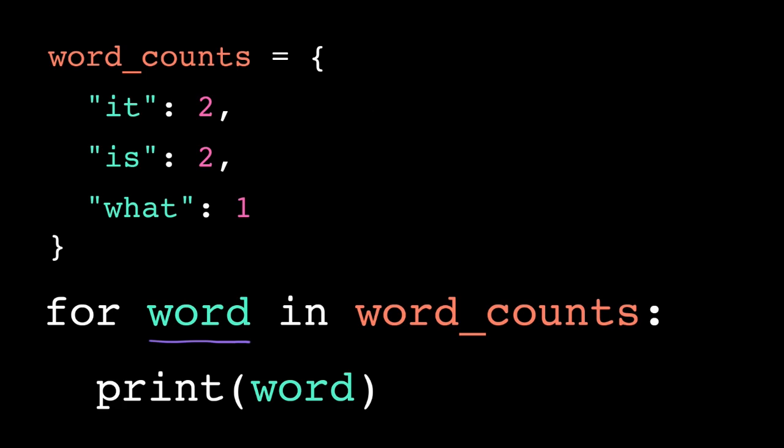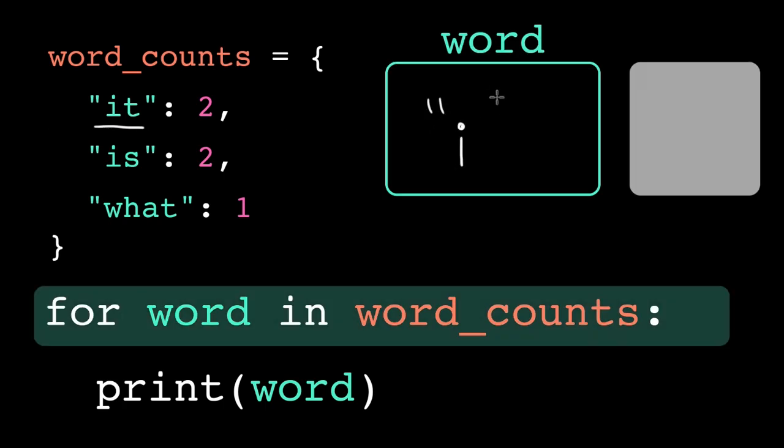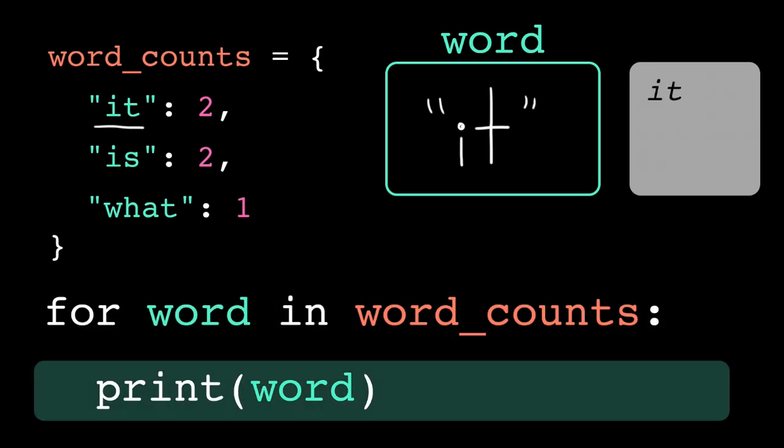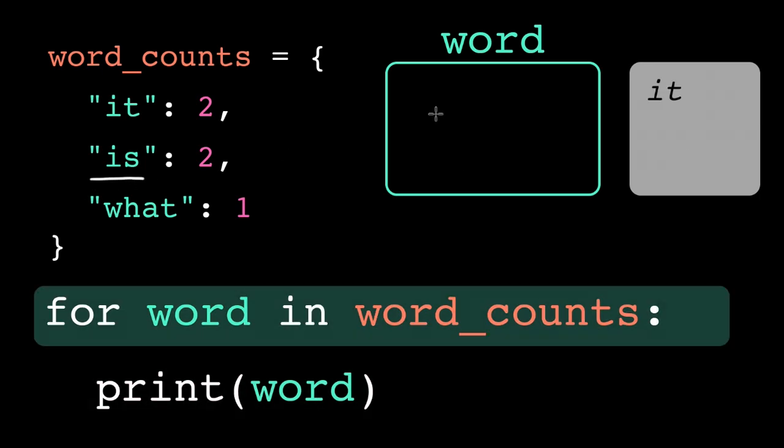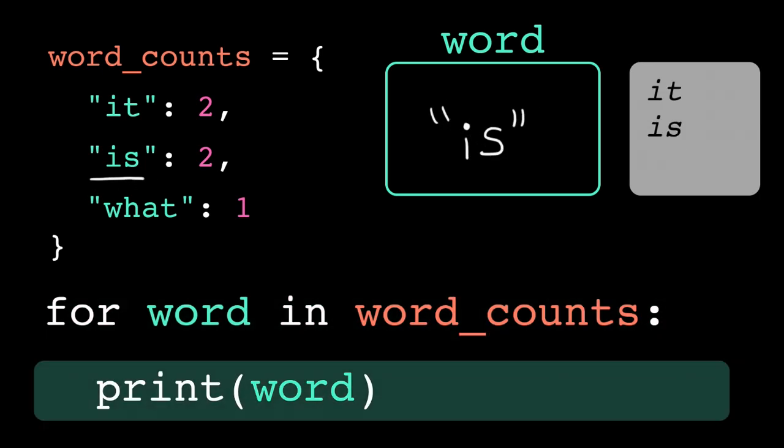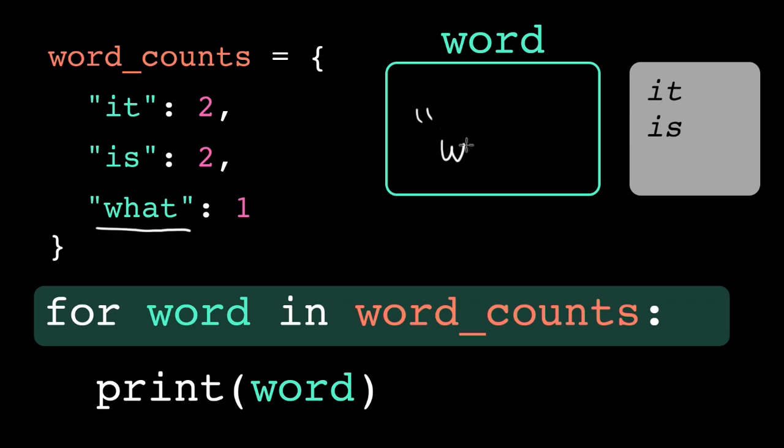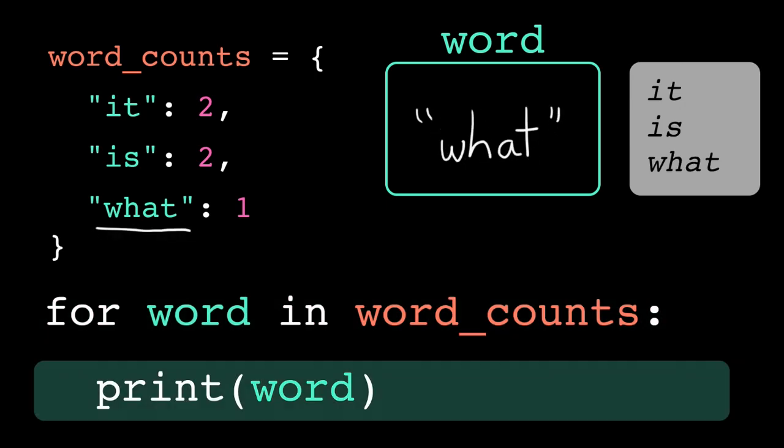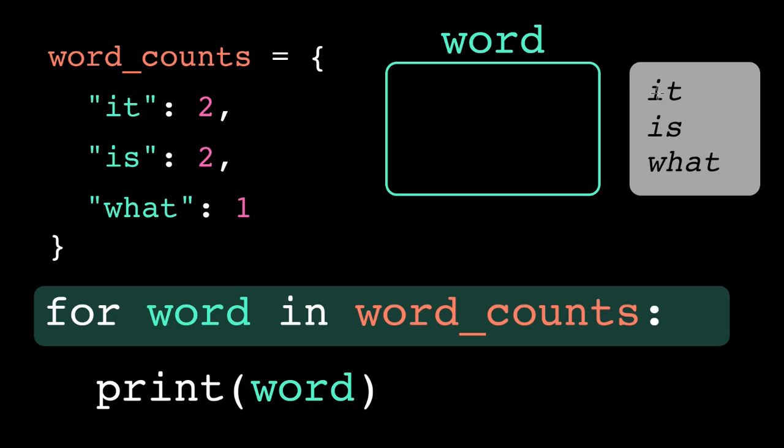Python iterates over dictionaries in insertion order, meaning the order the items were added. So on the first iteration, the loop variable word will hold the key it. On the second iteration, it'll hold the key is. And on the third iteration, it'll hold the key what. And now that we've reached the end of the dictionary, the loop terminates.